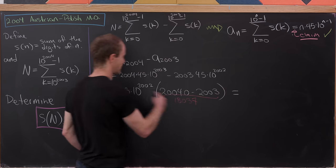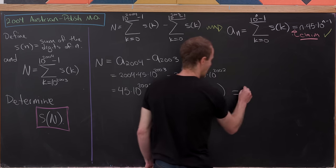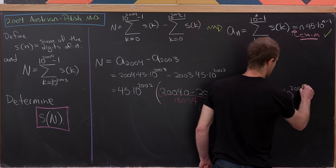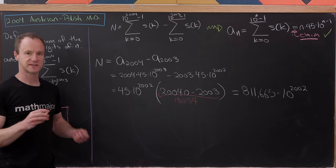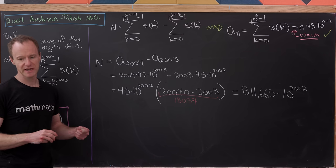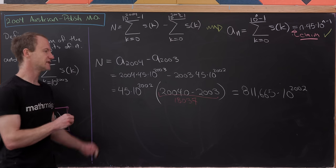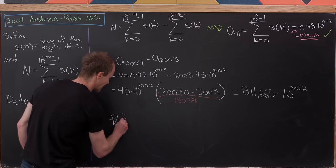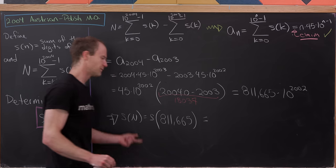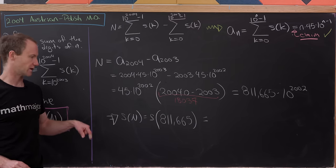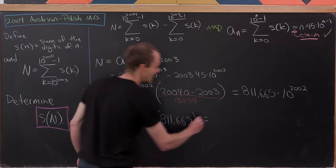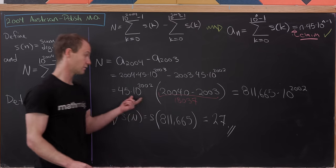Multiplying 45 × 18,037 = 811,665. So N = 811,665 × 10^2002. Since multiplying by 10^2002 doesn't change the digit sum, S(N) = S(811,665) = 8 + 1 + 1 + 6 + 6 + 5 = 10 + 17 = 27. That's our final answer.